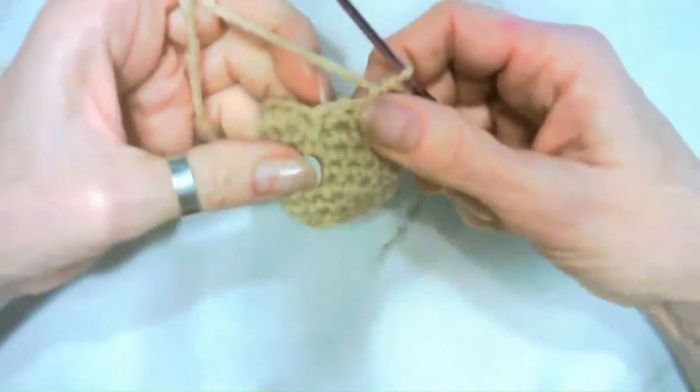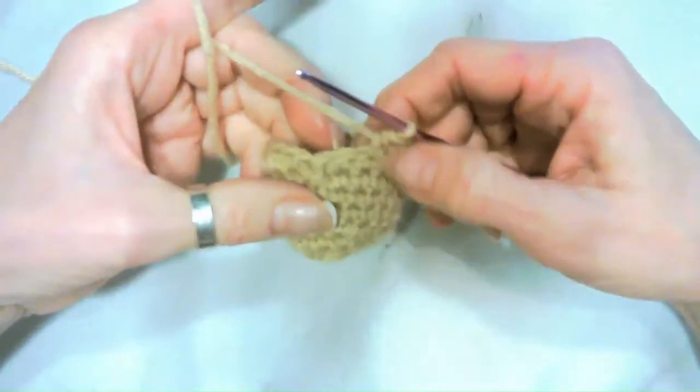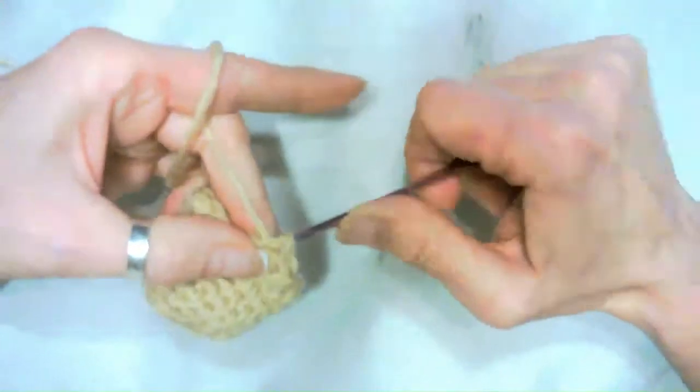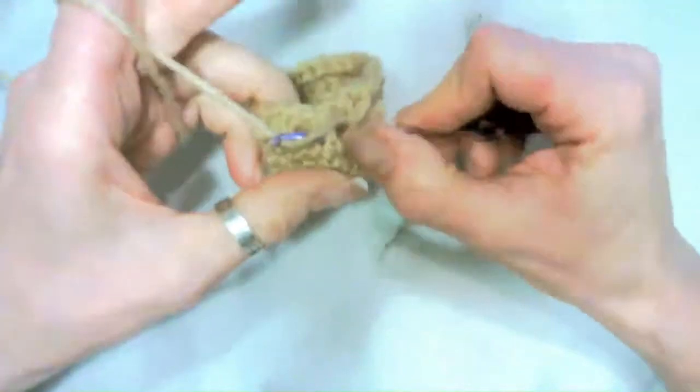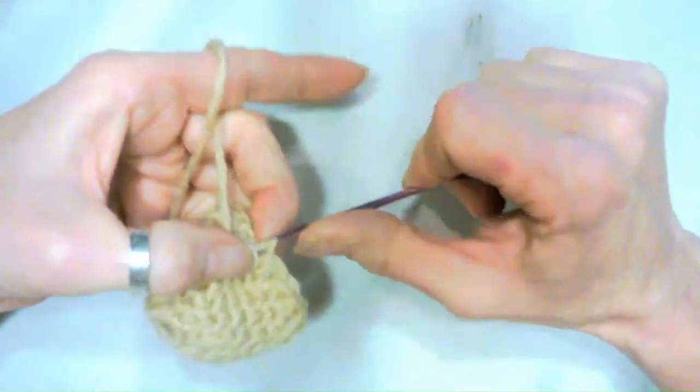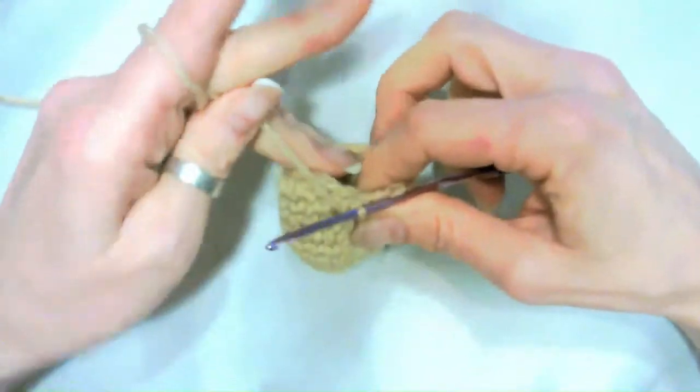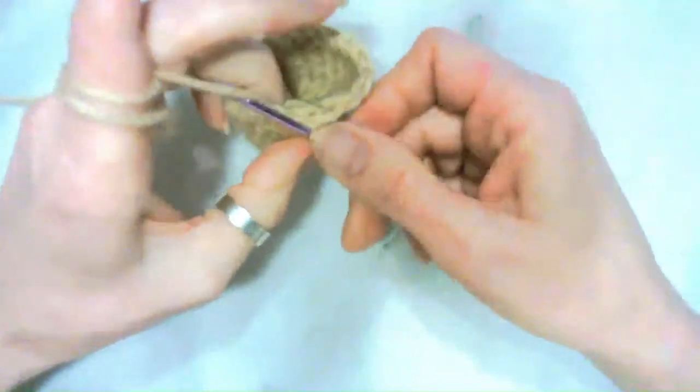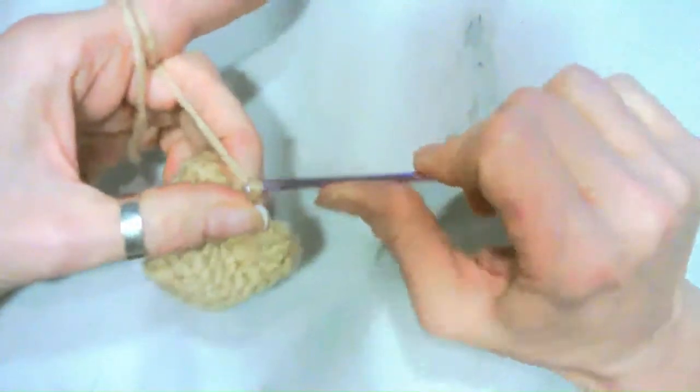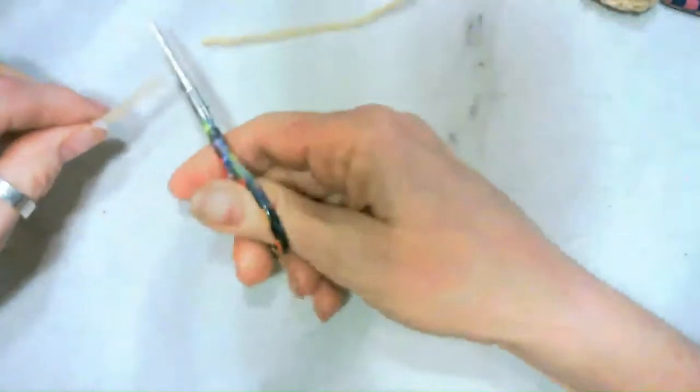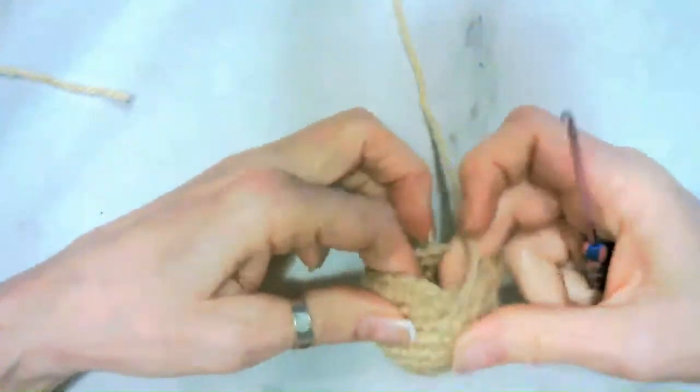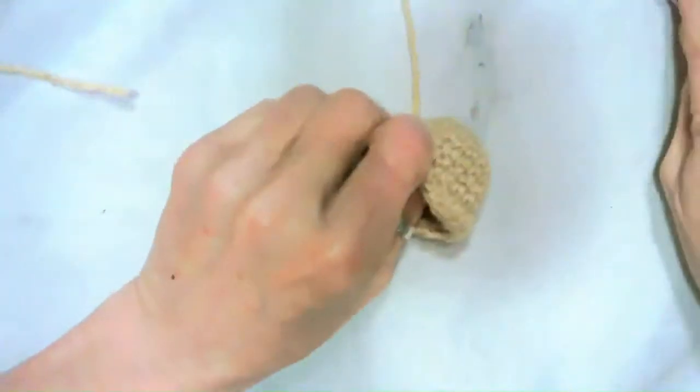We have this one more stitch left. We're going to go ahead and single crochet in this one. And then what we want to do is we want to come down and slip stitch in the same space that we slip stitched before. Let's go ahead and chain one so we can cut our yarn and weave that end in. So now we have our head done.